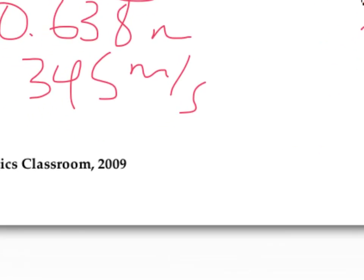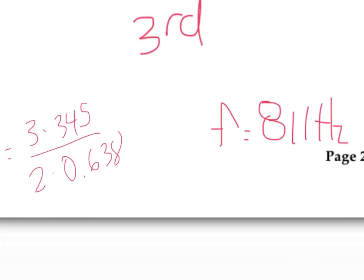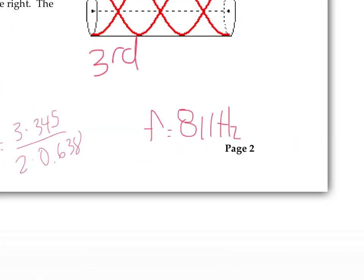Which means when we get into our equation, that says the frequency is nv over 2l. This is the first example on this page where n is not going to be 1. It's going to be 3, to represent the fact that we have a third harmonic here. So the frequency is equal to 3 times the velocity, 345, divided by 2 times the length, 0.638. No algebra here. Just crunch out those numbers, and hopefully you'll get something like 811 hertz for that one.